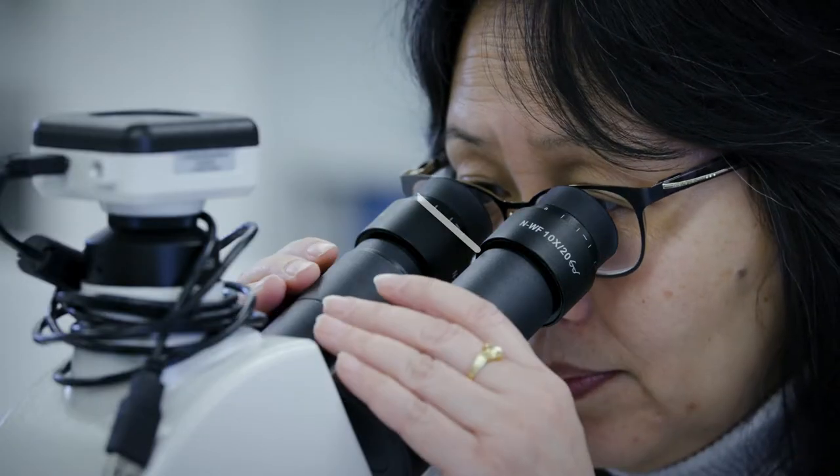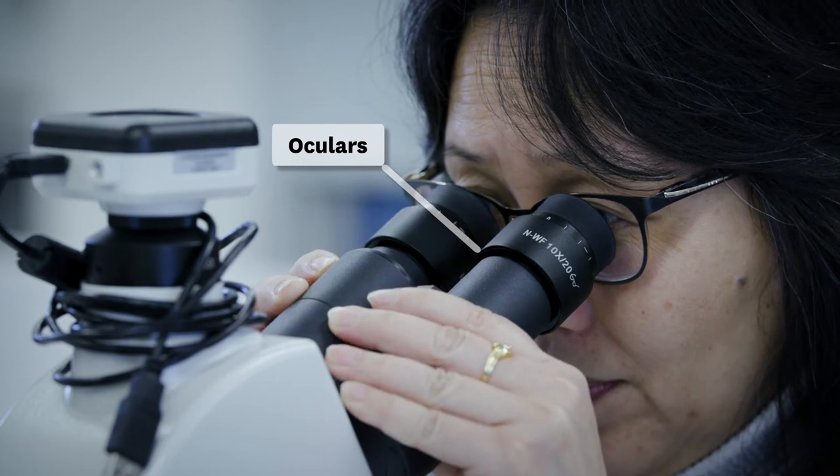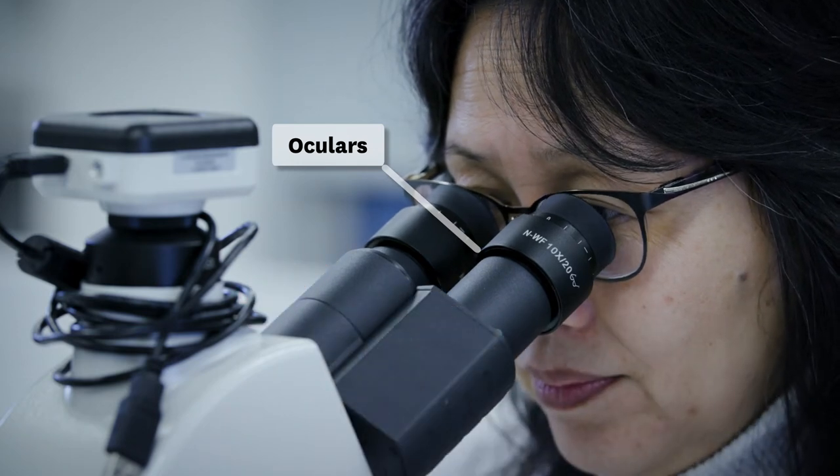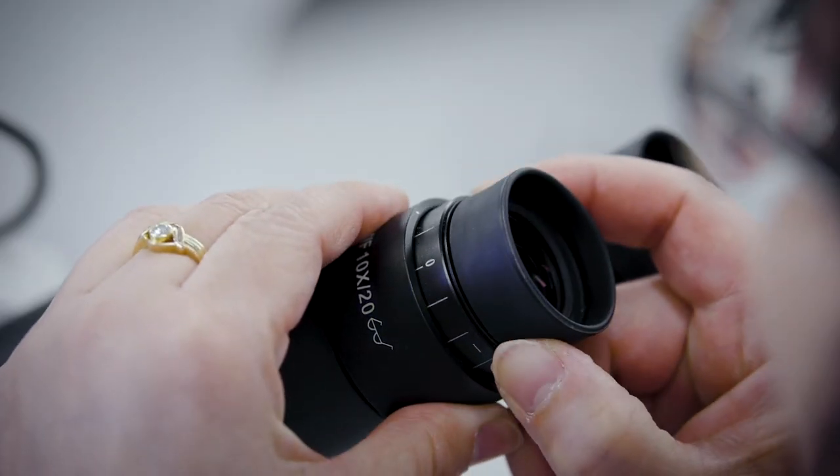Looking into the eyepiece, adjust the width of the oculars to suit the width of your eyes. It is important that you see the image with both of your eyes. Make sure the ring on the left ocular is set at zero.